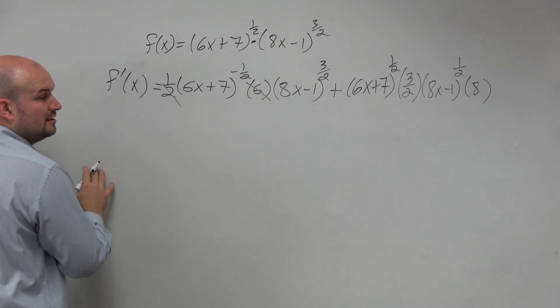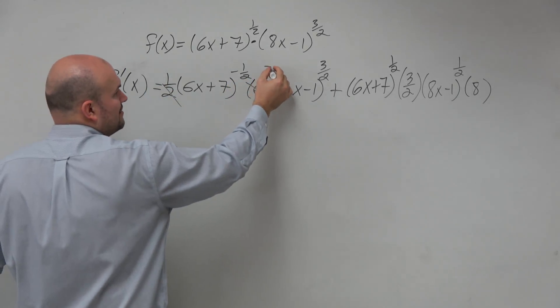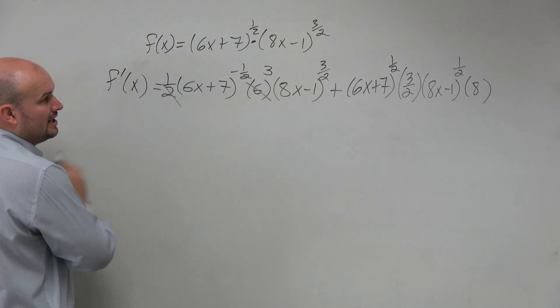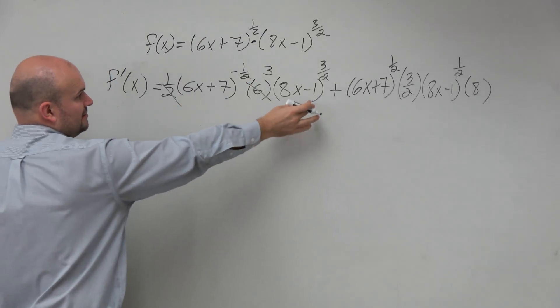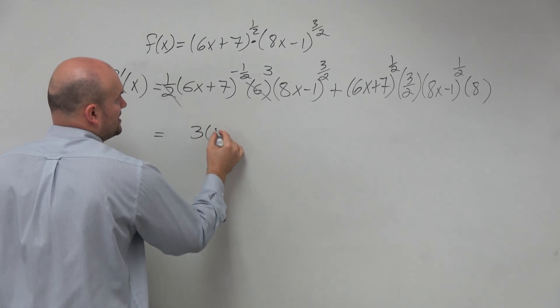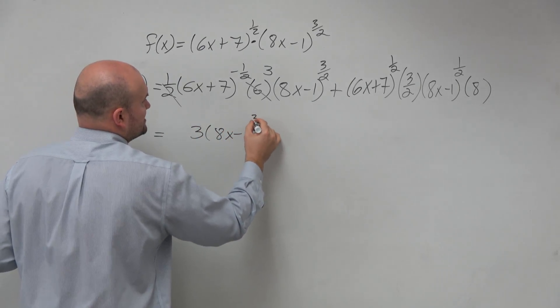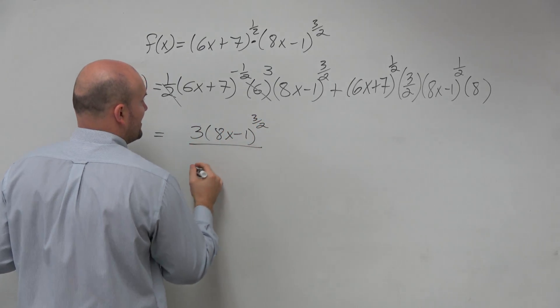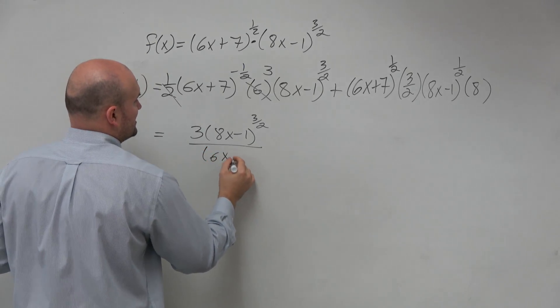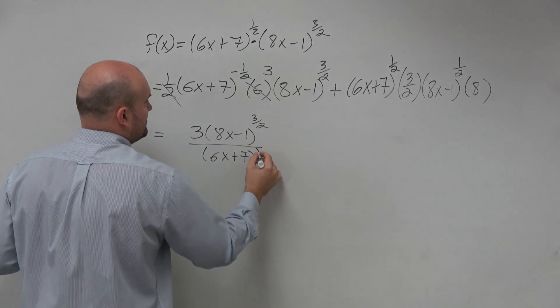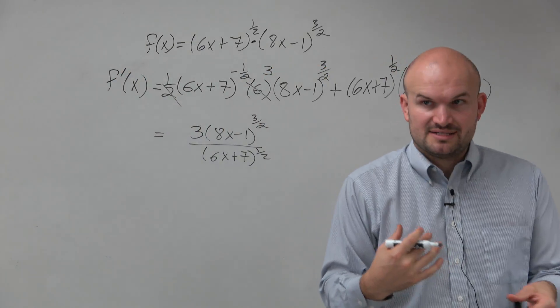So we notice a couple things here. The 2 and the 6 goes to a 3. This is going to go in the denominator, this will stay up top. So we're left with 3 times 8x minus 1 raised to the 3/2 divided by 6x plus 7 to the positive 1/2, because when I put it in the denominator, I turn it to positive.